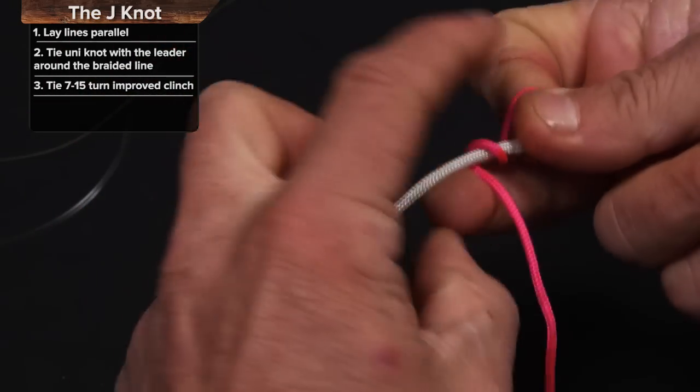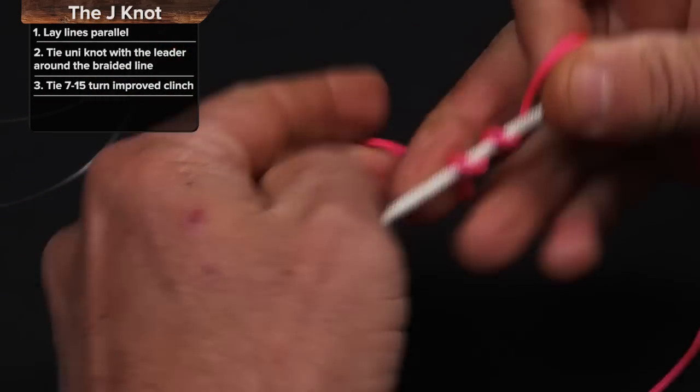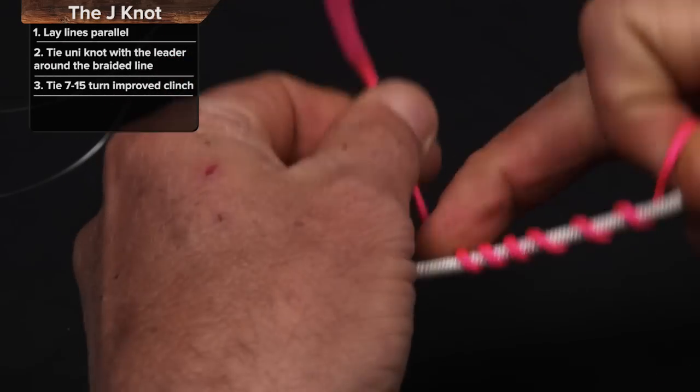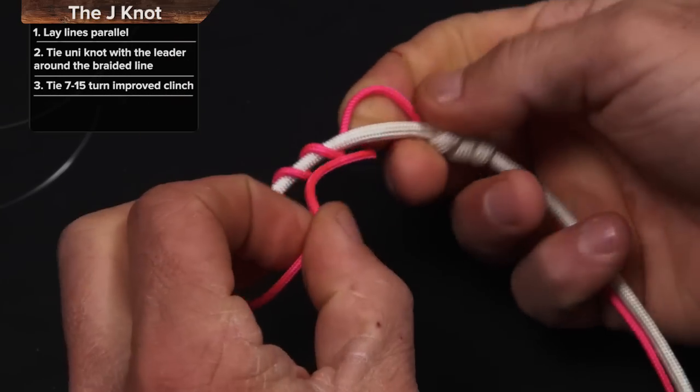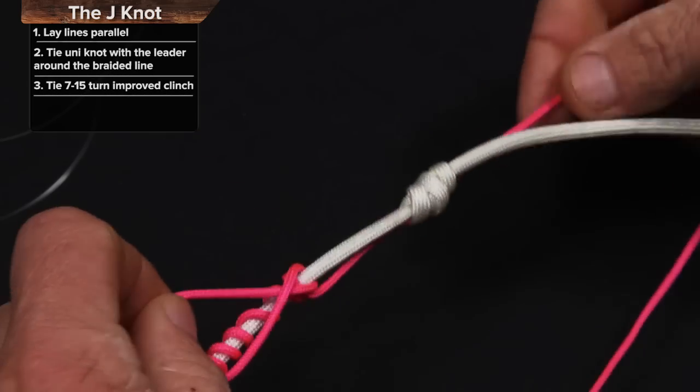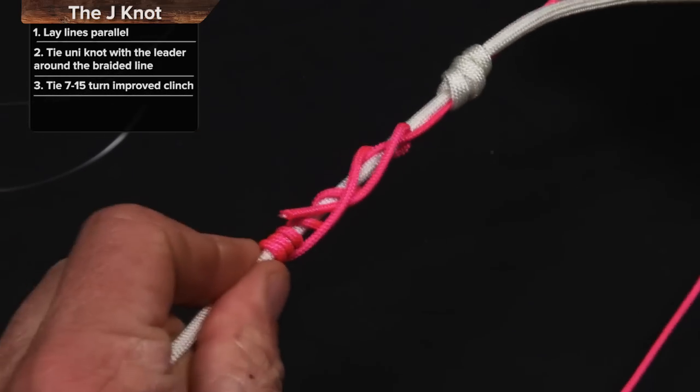One, two, three, four, five, six. Let's do seven on this, but sometimes I'll do as many as 12 with braid. I'll put it right through there, and right back through there, and I will draw this down.